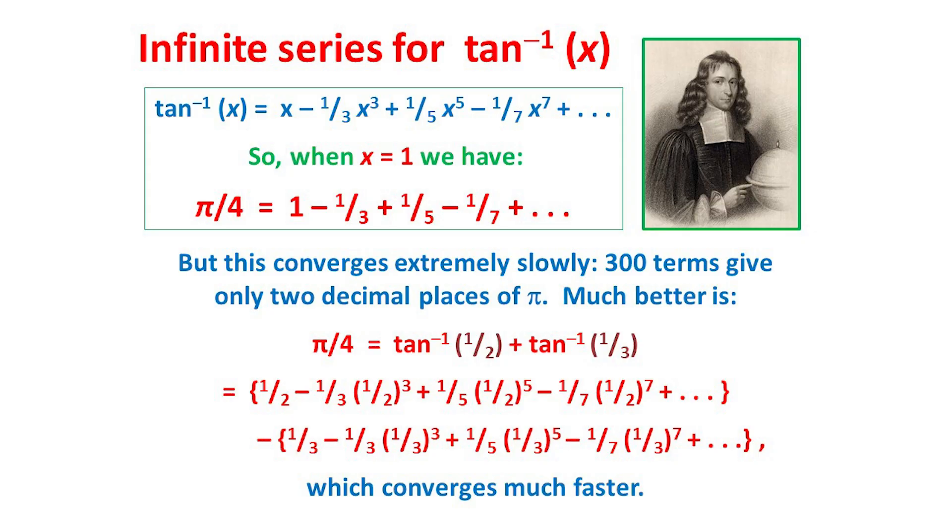If we now let x equals 1, we get a series expression for π/4, a result that was also known in India, but is now usually credited to the German Gottfried Leibniz. This is one of the most remarkable results in the whole of mathematics. By simply adding and subtracting numbers of the form 1 over something, we get a result involving the circle number pi.